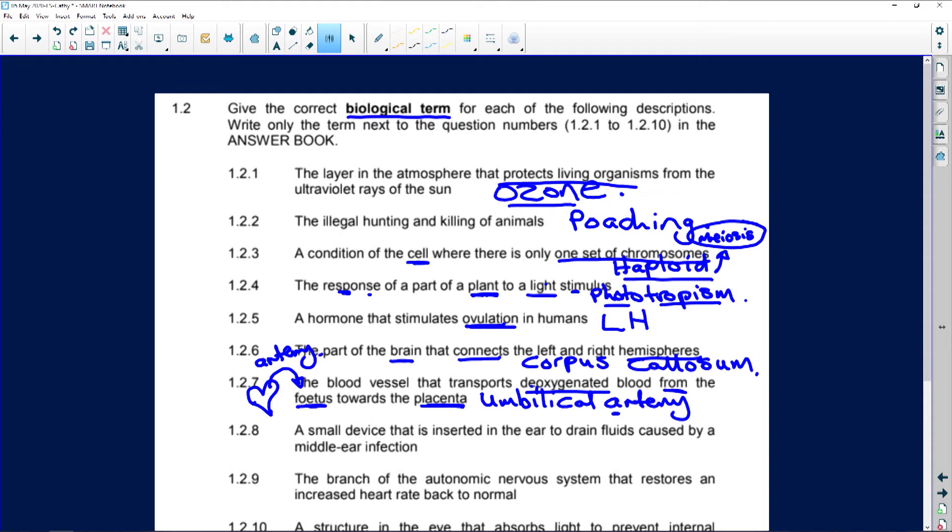And the rule is any vessel that leaves and takes blood away from the heart is always called an artery. So here, the fetus's blood system carries the deoxygenated blood away from the fetus back to the placenta. So it's via the umbilical structure. And it will be the artery because it moves away from the fetus.